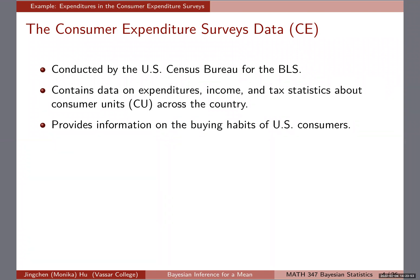It's actually a huge survey that contains a lot of information, mostly data on family income, expenditures, and tax statistics. You can think about consumer units (CU) as families or households. It provides information on the purchasing habits of U.S. consumers, and the CPI index is actually updated and derived from some of the survey results from this survey.